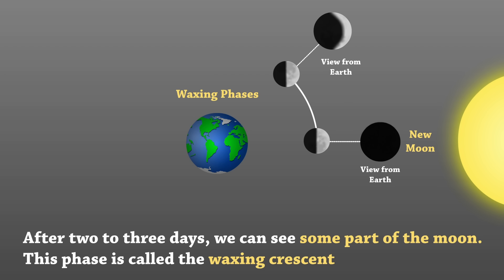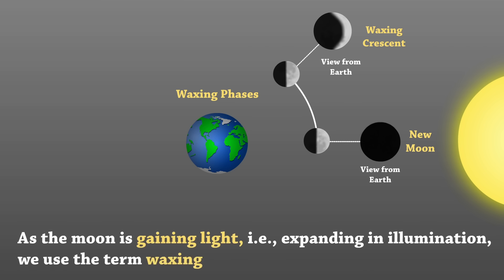After two to three days, we can see some part of the moon. This phase is called the waxing crescent. As the moon is gaining light, that is, expanding in illumination, we use the term waxing.